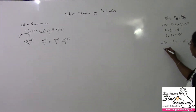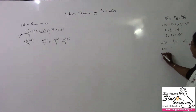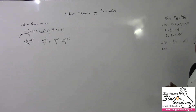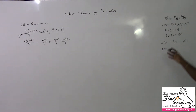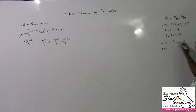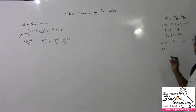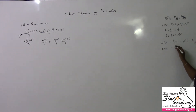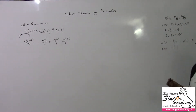A ∩ B is the empty set. A ∪ B covers the full sample space, so A and B are exhaustive. And since A ∩ B is the null set, they are also mutually exclusive.